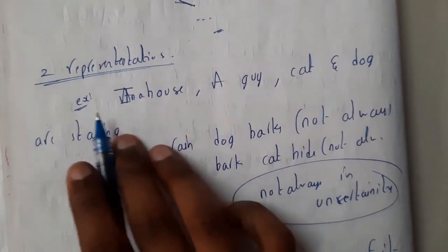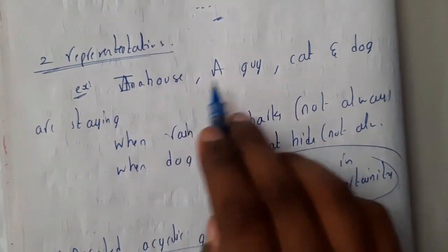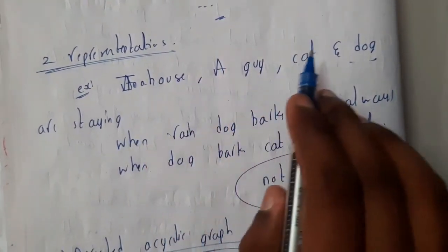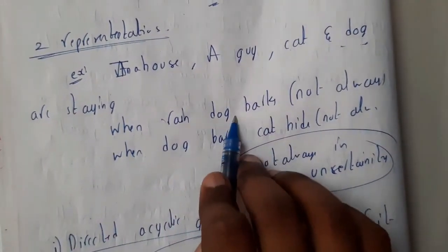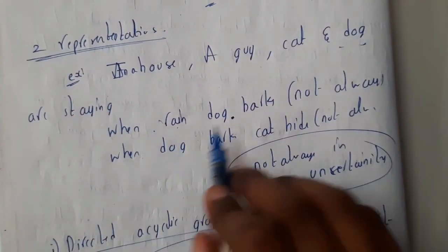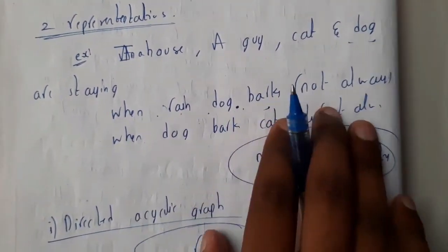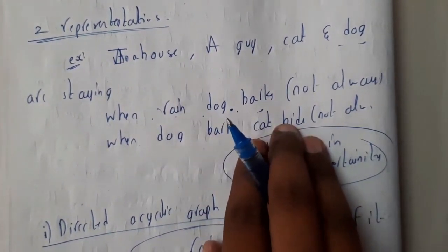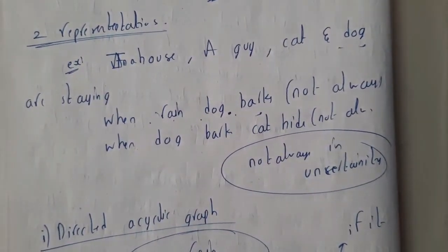We have two different representations. Take a small example: in a house, a guy, cat, and dog are staying. When it rains, the dog barks, but it's not always true. If it's sleeping, it won't bark. When a dog barks, the cat will hide. This is also not always true. These 'not always' situations are nothing but uncertainty.